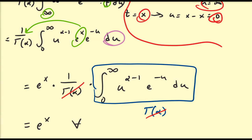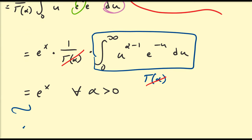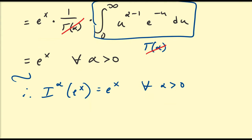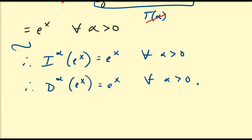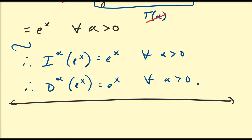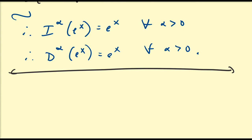So this is going to be equal to e^x, and this is true for all values alpha — in general, alpha positive. That means the fractional integral of e^x equals e^x for all α > 0. We can also reverse this and say that the fractional derivative of e^x is also equal to e^x, true for any α > 0. That matches our intuition.